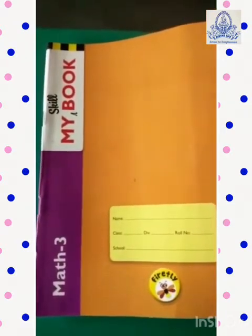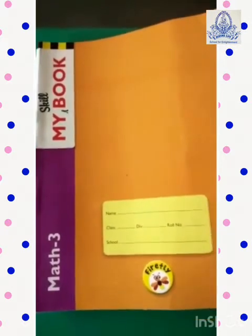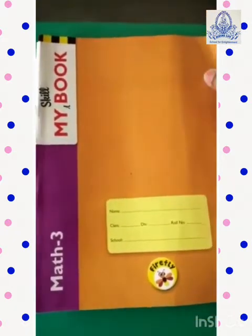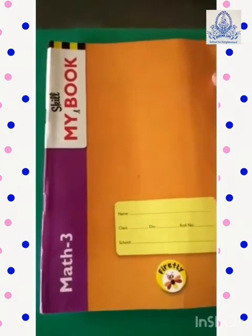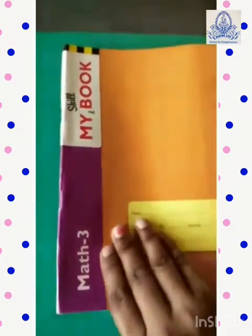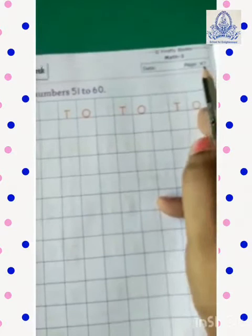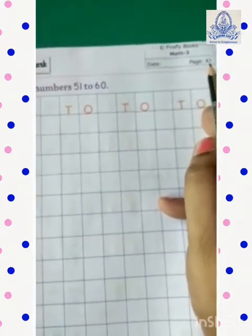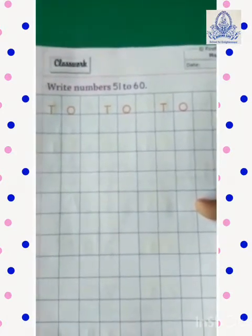Now, take out your maths workbook number 3. Now take out page number 47. This is page number 47. Okay, now let's see what we have to do over here.